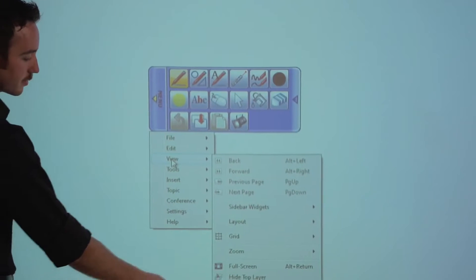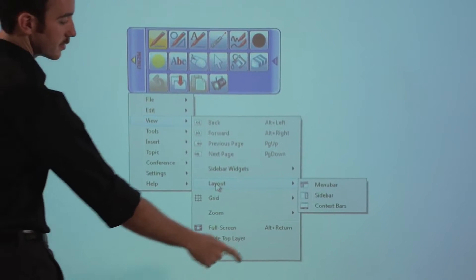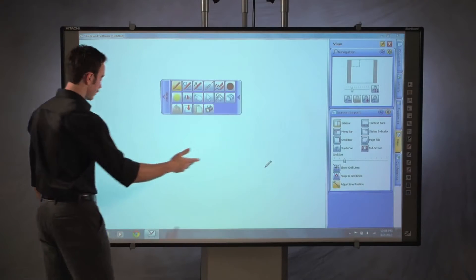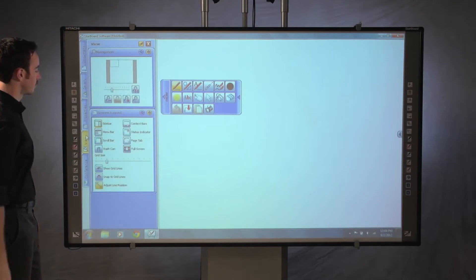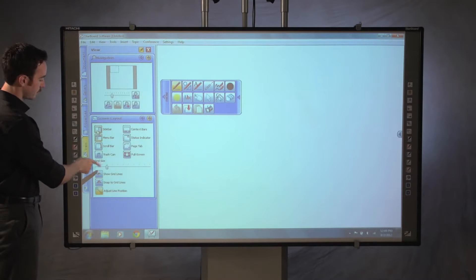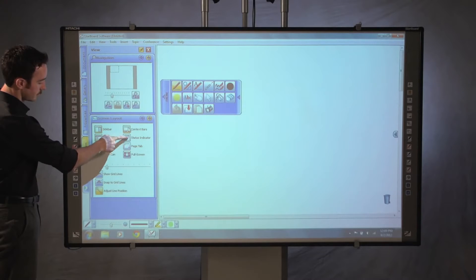For easy access to additional tools, add the sidebar tabs to the right side of your screen or toggle them to the left. For even more accessibility, add the top menu bar, scroll bar, trash can, context toolbar, status indicator, and page tab.